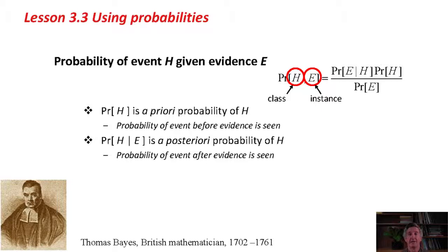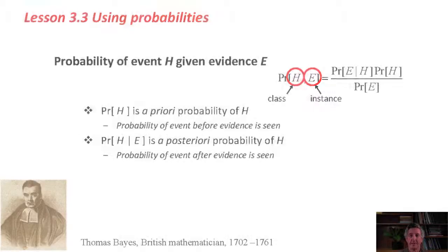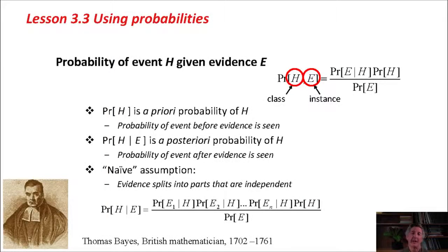For example, in the weather data, I think there are 9 yeses and 5 noes. The baseline probability of the hypothesis, play equals yes, is 9 over 14, and play equals no is 5 over 14. What this equation says is how to update that probability, PR of H, when you see some evidence to get what's called the a posteriori probability of H. That means afterwards, after the evidence. The evidence, in our case, is the attribute values of an unknown instance. That's E.